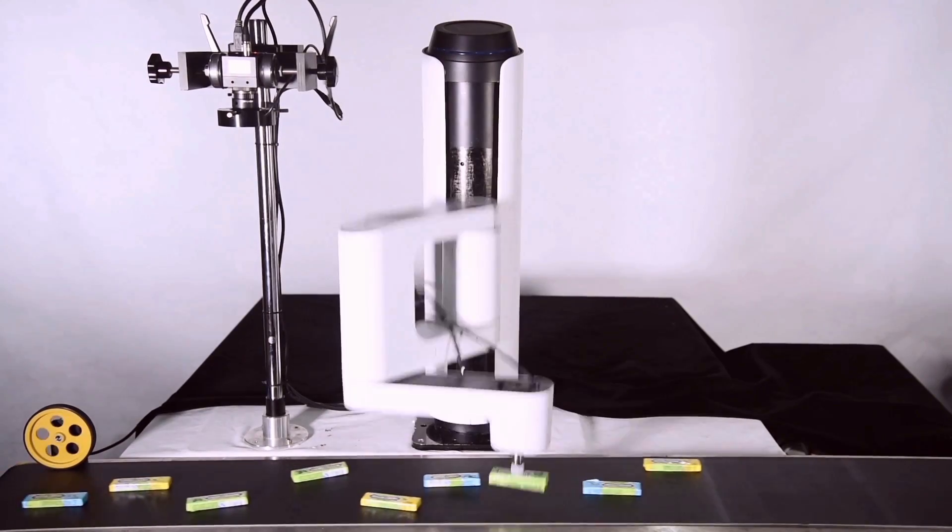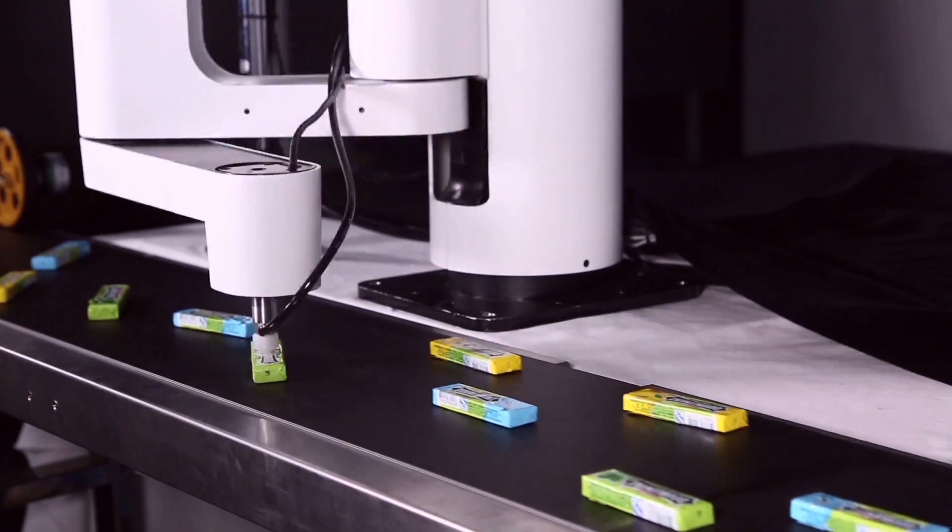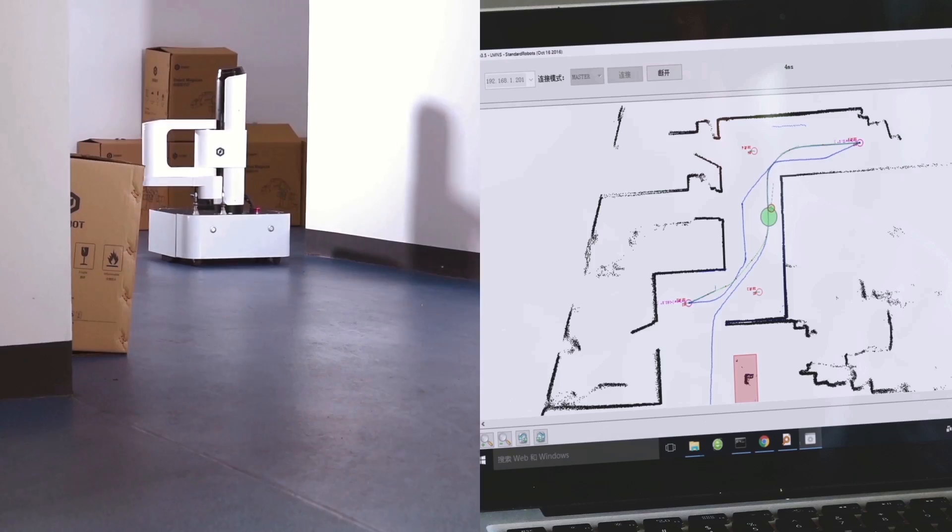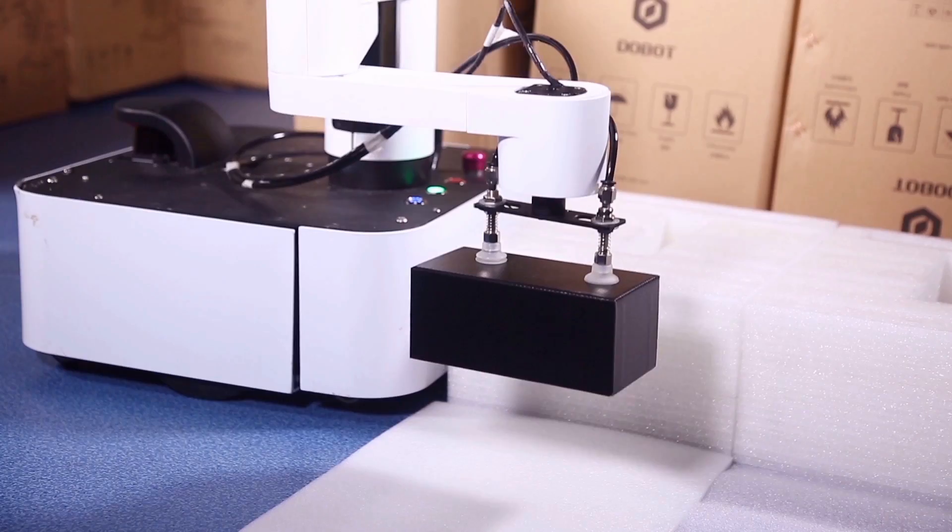Ultimately, Dubot M1 is built to replace manpower and production line, working day and night non-stop. The built-in mapping and path planning system provides excellent mobility, providing inventory management service in your warehouse.